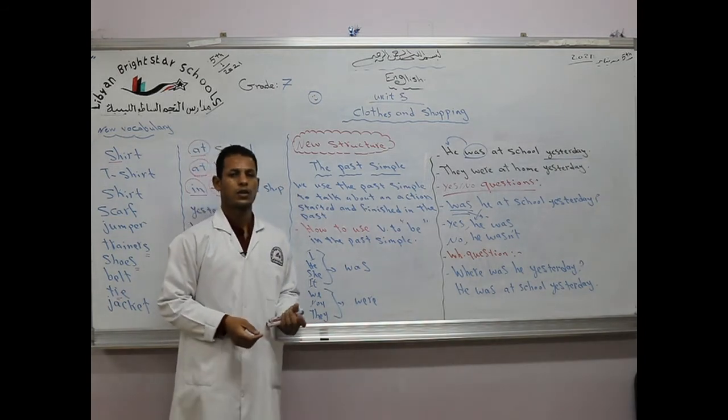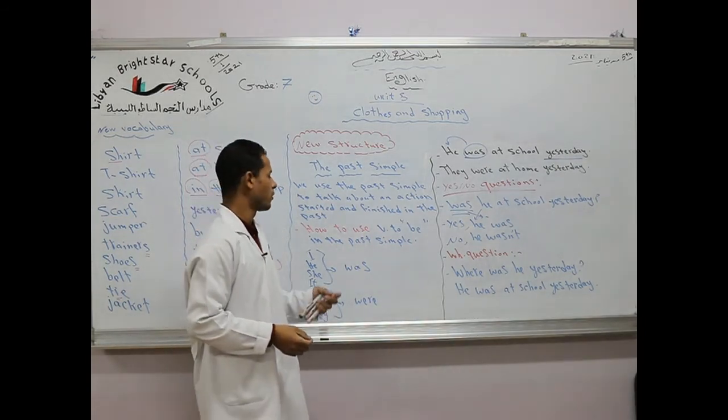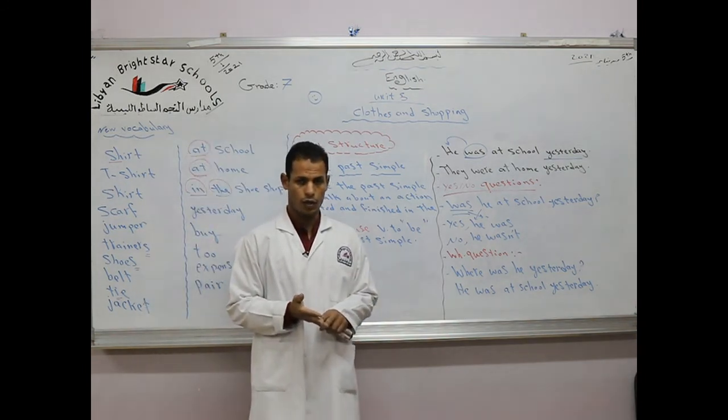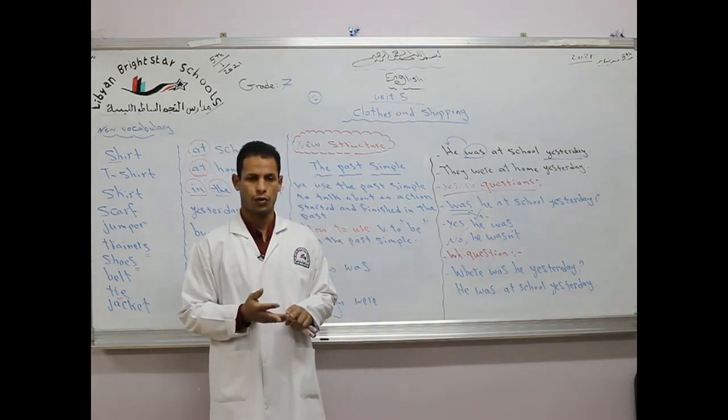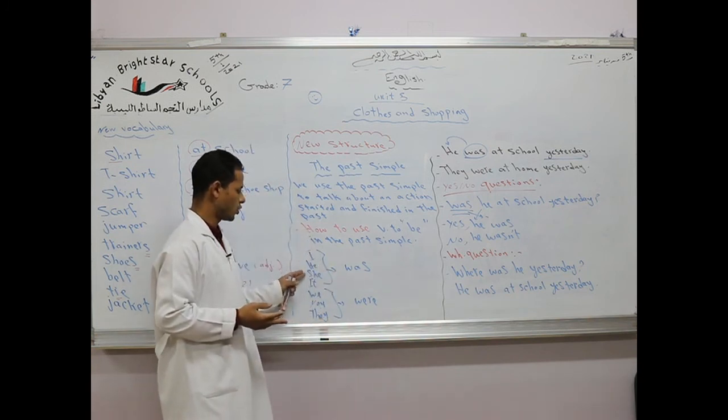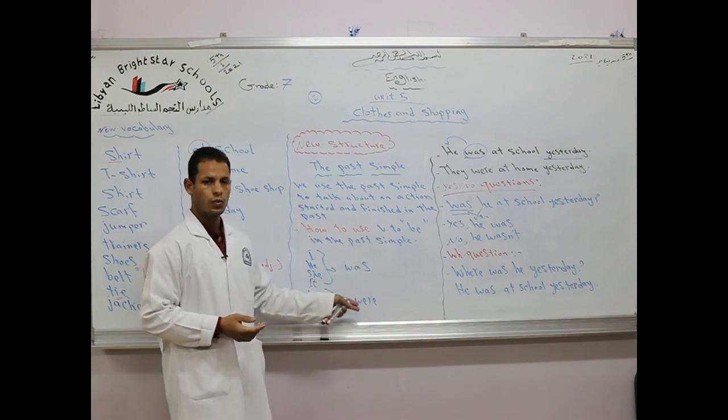That's about the past simple with the verb to be. Was, were. We use was for singular. We use were for plural. Again, we use I, he, she, it, was. We, you, they, were.